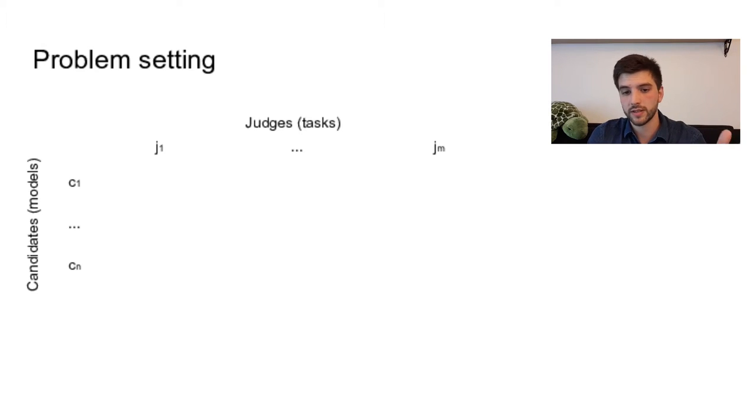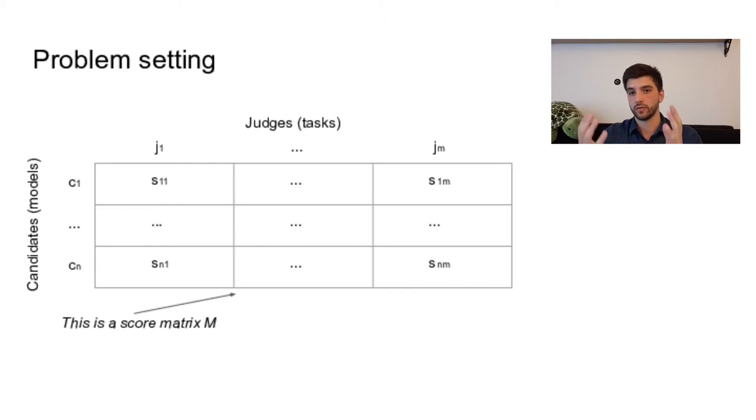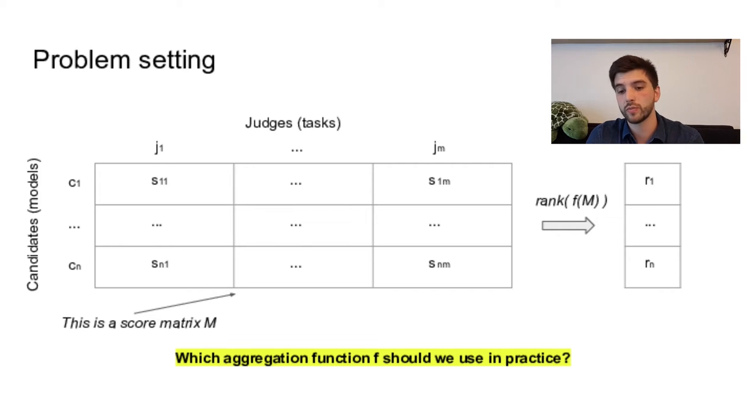Each candidate model has been trained and tested on all the tasks of the task set. So we call the task set the judges, and they can typically be different datasets with an evaluation procedure for each and a scoring metric. So this leads to a matrix of scores. And the question is, which ranking function should we use to aggregate the scores to obtain one global ranking of the candidates that represents well the overall performances across all the datasets?